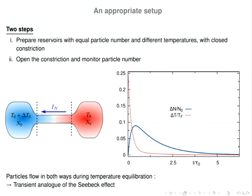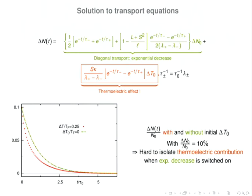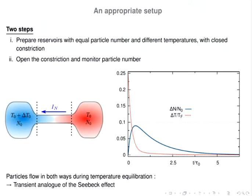The idea is a two-step experimental protocol. First, prepare the reservoirs with identical particle numbers. Close the constriction and heat one reservoir separately. Then reopen the constriction and let the system evolve. If thermoelectric effects are present, one will observe an exponential decrease of the temperature difference and a flow of particles back and forth restoring thermodynamic equilibrium. This is the transient analog of the Seebeck effect.